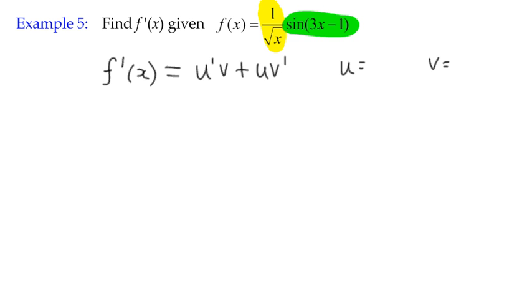So we have to define what u is and what v is, but in this case here, u, the first term is 1 over root x, and the second term, sine 3x minus 1.